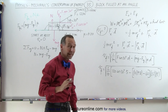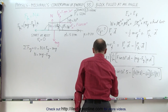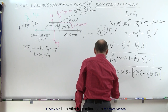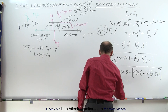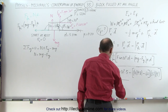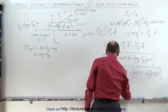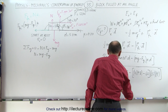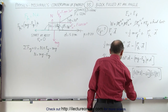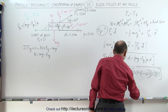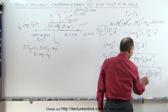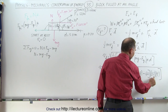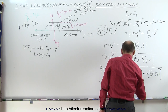Simplifying, v_final equals the square root of one-tenth times 600 times cosine of 30 degrees, minus — this is 98 minus 60, that's 38 times 1 — so minus 38.